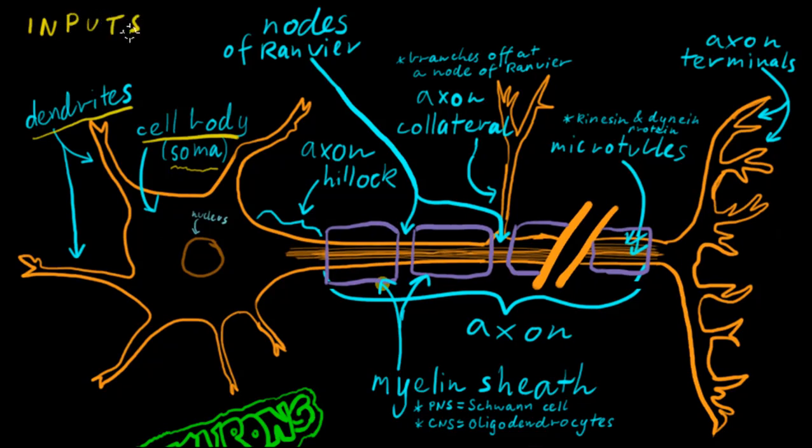The purpose for that is so that we can have more inputs or different types of inputs. When I'm talking about inputs, I'm talking about signals coming into the neuron which are then able to be propagated and sent as a signal to something else.